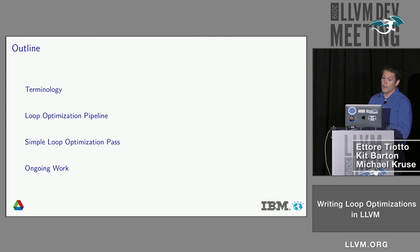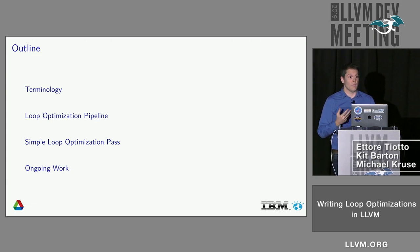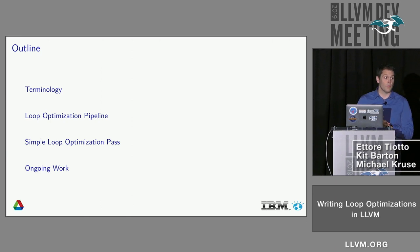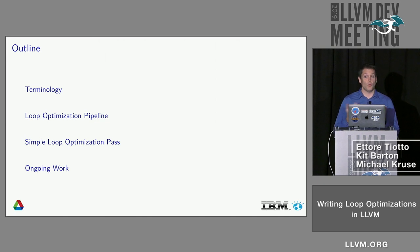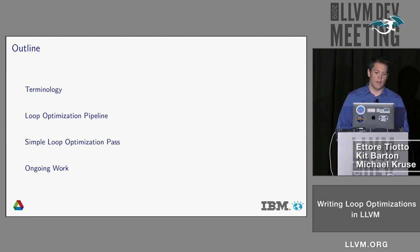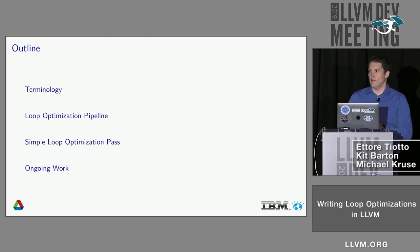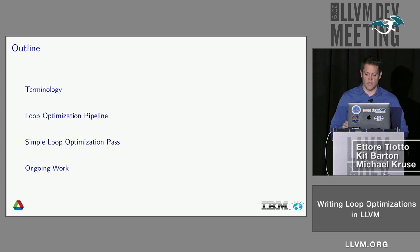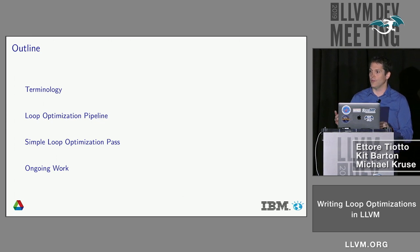A brief outline of what we're going to walk through today: I'm going to take you through some terminology you'll run into when writing a loop optimization, and some common forms of loops. Then Mike's going to talk about LC SSA form, the loop closed SSA form, and walk through loop optimizations already in LLVM. Not all of them are enabled by default. Then Ettore will give a demo on writing a simple loop pass, walk through the steps, and finally talk about ongoing work on loop optimizations.